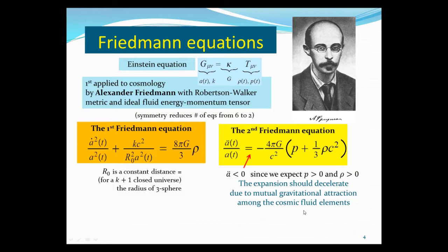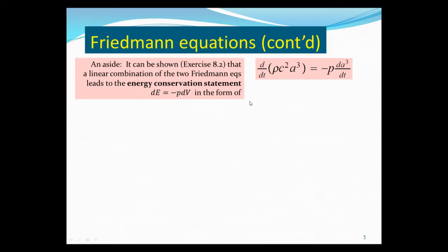Again, I'm saying this is the first equation, this is the second equation. We'll make a comment that it can be shown in Exercise 8.2 that a linear combination of the two Friedmann equations can lead to a statement of energy conservation, which means the change in energy equals minus pressure times the change in volume. This is the first law of thermodynamics, the energy conservation statement, which can be written as the change in energy, the energy density times volume, so that this is where you have change in energy equal to minus pressure times change in volume.